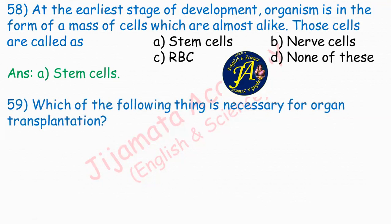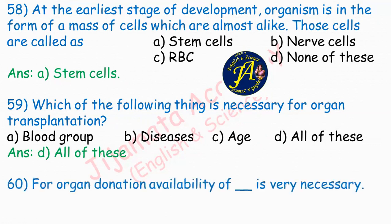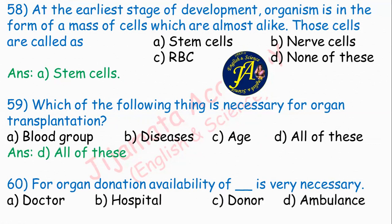Which of the following is necessary for organ transplantation? Options are blood group, diseases, age, all of these. For organ donation, availability of dash is very necessary — options are doctor, hospital, donor, ambulance. Option C: donor is necessary.